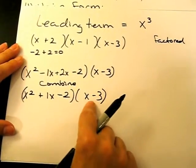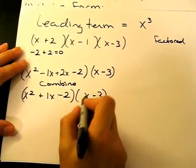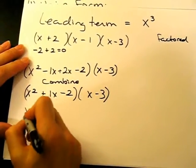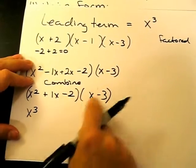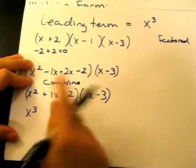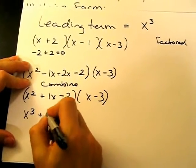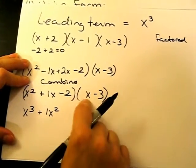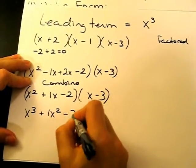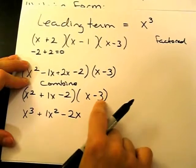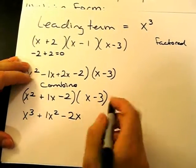Now I'm going to foil this factor to this factor. So x times x squared is x third. Excuse me, x to the third power. x times 1x is 1x squared. x times negative 2 is negative 2x.